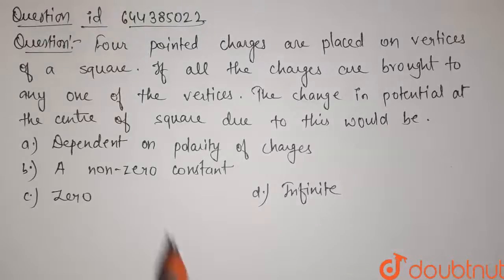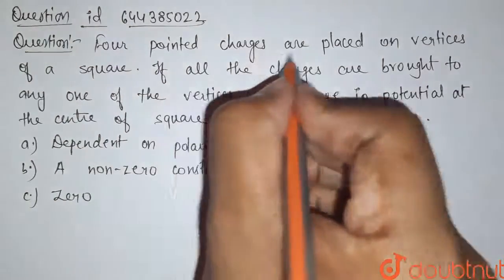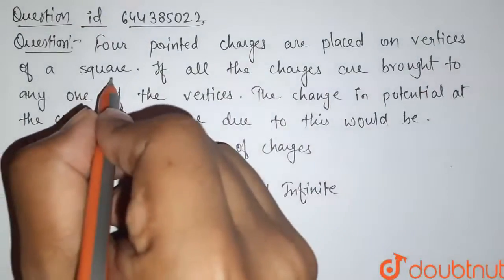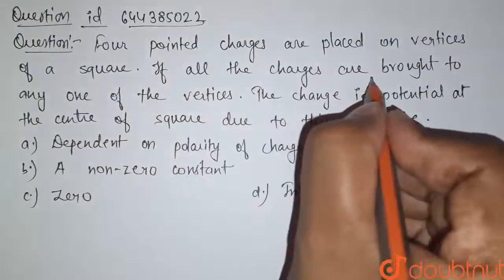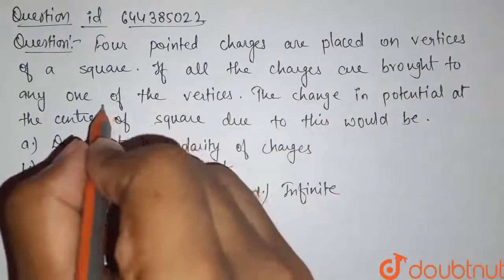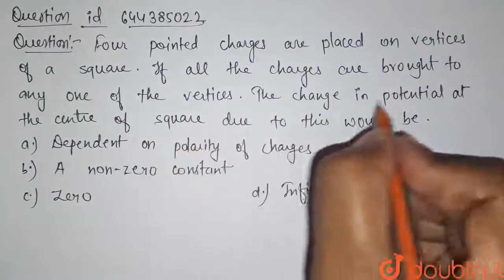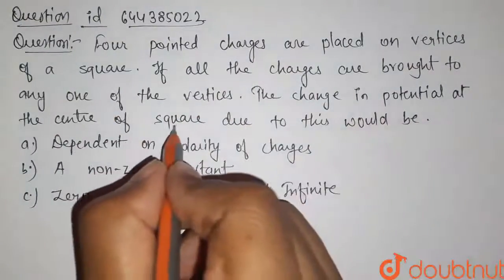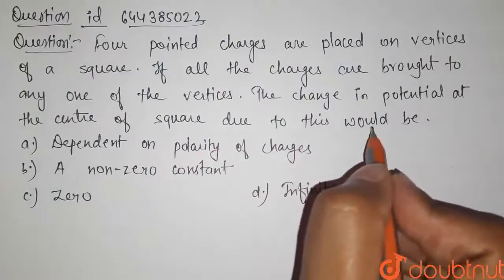Students, here is our question. Four point charges are placed on vertices of a square. If all the charges are brought to any one of the vertices, the change in potential at the center of a square due to this would be.